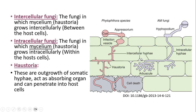Haustoria are actually outgrowths of somatic hyphae. Here you can see these haustoria — they are outgrowths of somatic hyphae which act as absorbing organs and they can also penetrate into the host cells.